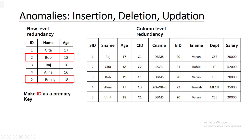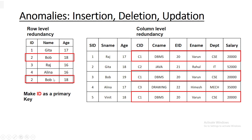The columns that are exactly the same at multiple places include c_id, c_name, id, name, department, and salary. This is column-level redundancy — some columns are exactly the same at multiple places in the database.